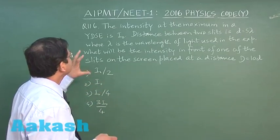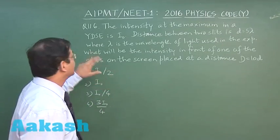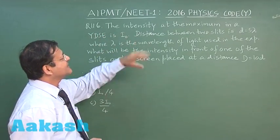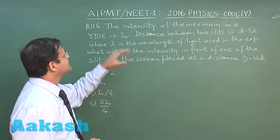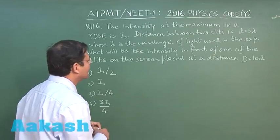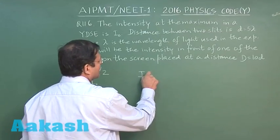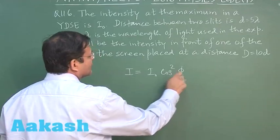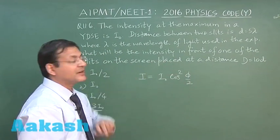Now let us look at next question, that is question 116. Now this question 116 is based on Young's double slit experiment. In short we have written YDSE. It says that the intensity at the maximum in a Young's double slit experiment is I0 and you have to find out the intensity at some other position. So you can use the formula I is equal to I0 cos square phi by 2. Path difference or phase difference, if you can calculate phase difference is phi.